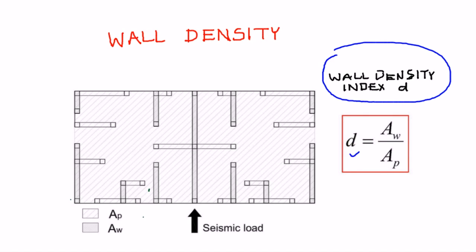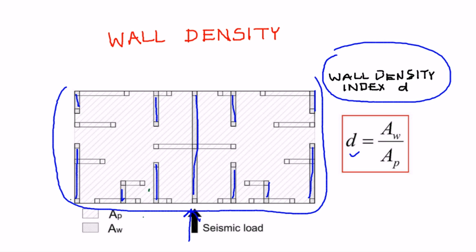So d is defined as the area of walls AW — which, for one direction of seismic loading, is the total cross-sectional area of all walls acting in or laid in one direction — divided by the total plan area of a building. This value is calculated in a simple manner and expressed as a percentage.